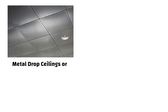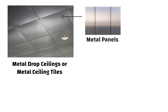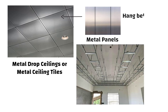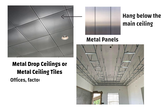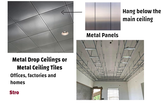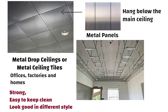Hello friends. Metal False Ceilings, also known as Metal Drop Ceilings or Metal Ceiling Tiles. These types of ceilings are made from metal panels that hang below the main ceiling. They are used in many types of buildings including offices, factories and homes. These ceilings are popular because they are strong, easy to keep clean and can look good in different styles.